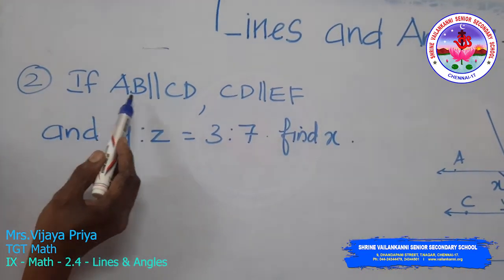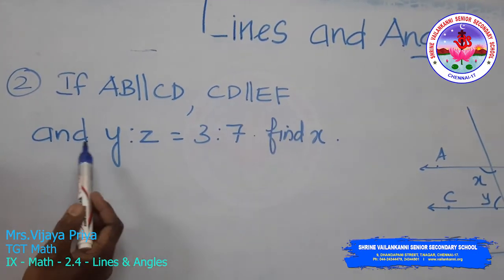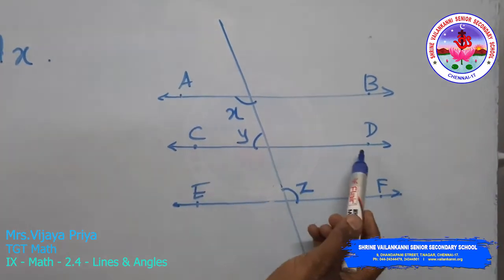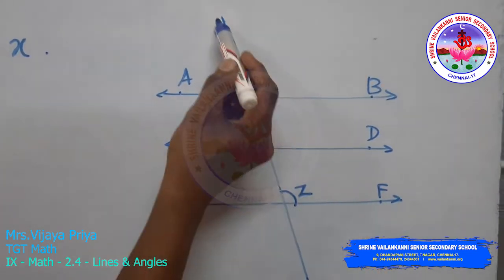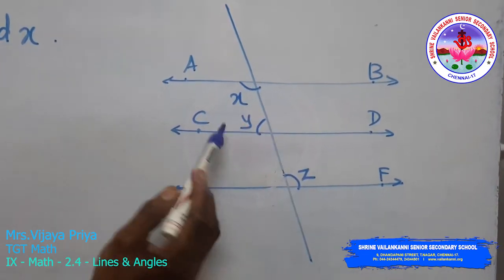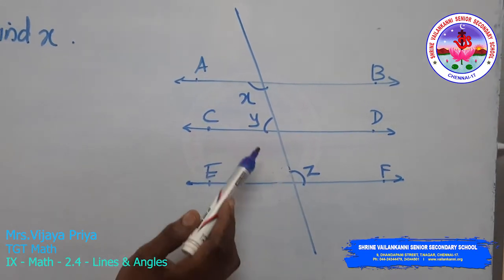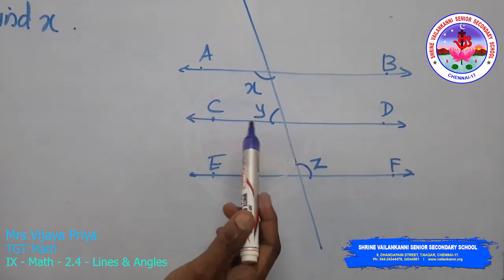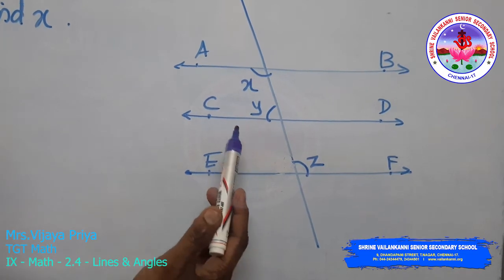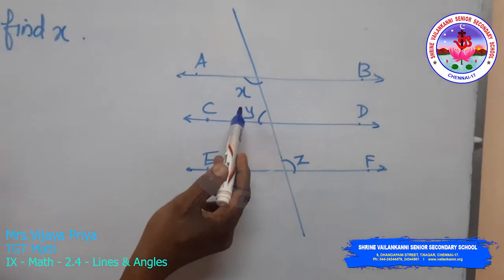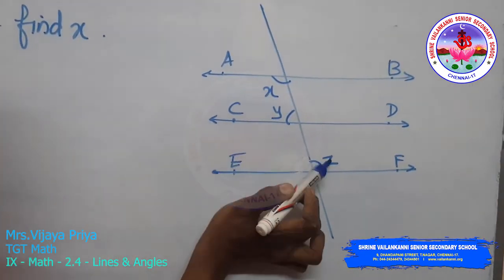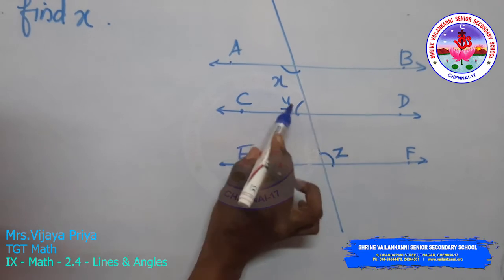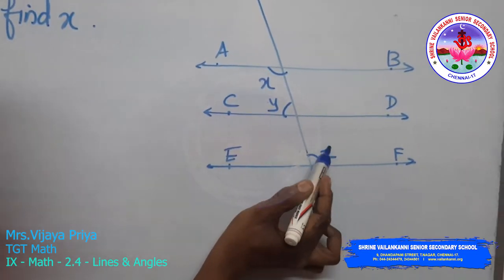Second problem: if AB is parallel to CD and CD is parallel to EF, and y to z equals 3 to 7, find x. A transversal cuts these parallel lines at three distinct points. We need to find x, given y to z equals 3 to 7, using any of the three relations — corresponding angle, alternate interior, or co-interior. Since y and z are not directly related by a single property, I will introduce an auxiliary angle.